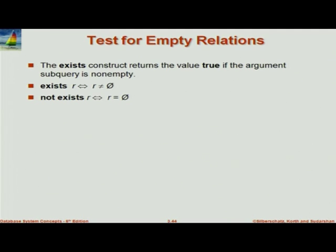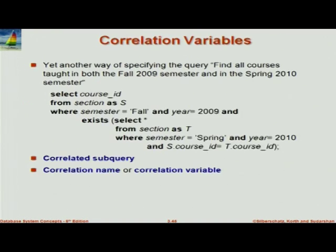When you have a nested query, we saw the IN clause. There are also the EXISTS clause and NOT EXISTS clause. Look at this particular query — this is an example of a correlated subquery. Let's take the same one as before: courses taught in both fall 2009 and spring 2010, but written differently.